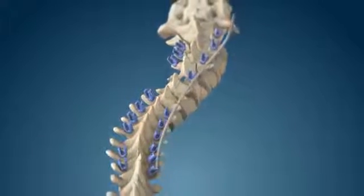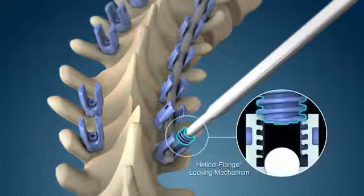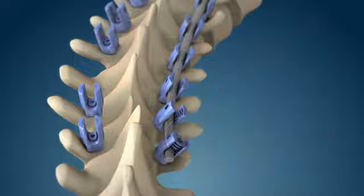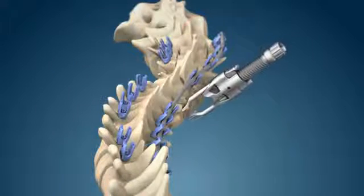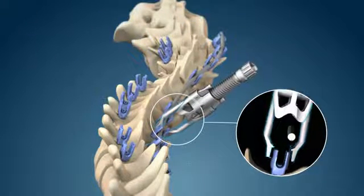The appropriate length rod is selected and contoured to match the desired sagittal profile. Derotation helical flange plugs engage the top screws. The threaded rocket reducers may be used to align the rod, progressing in a caudad direction.